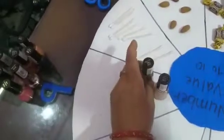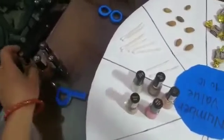Number 9. So, I have 9 nail paints. Now I am going to count the nail paints. 1, 2, 3, 4, 5, 6, 7, 8, 9. So, these are 9 nail colors.